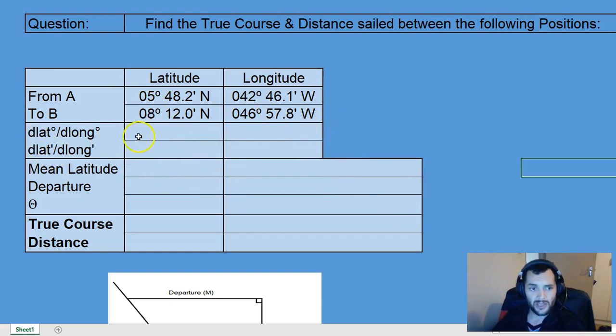We need to find the difference in latitude in degrees and minutes, and the difference in longitude in degrees and minutes. Going from 5 degrees 48.2 minutes north to 8 degrees 12 minutes north, we travel a total distance of 2 degrees 23.8 minutes north. That degree value multiplied by 60 tells us we've covered 143.8 minutes north, which equals a nautical mile. So we've traveled north by 143.8 miles.